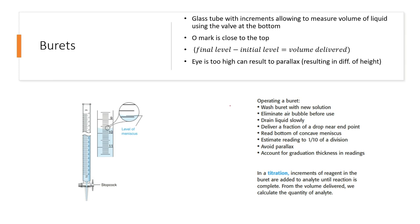When operating a buret, wash it with new solution - it depends each time. Make sure the air bubble is eliminated before you use it. Drain the liquid slowly. This is very important: deliver a fraction of a drop near the endpoint. Because endpoint, as you'll learn in titration, is when important changes take place. In general, you should develop a habit of delivering tiny bits, not right away, because you're going to miss the endpoint. That's one thing you should never miss when doing titration.